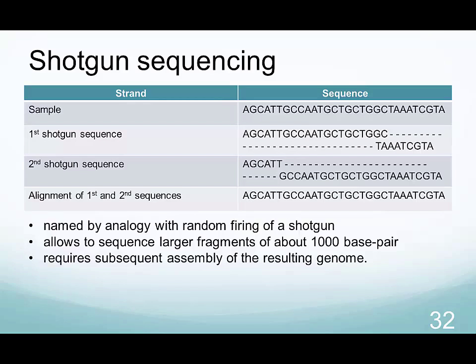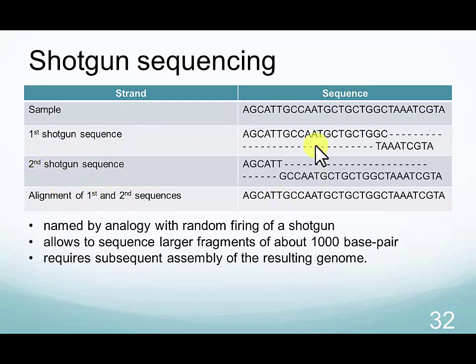In shotgun sequencing, the overlapping fragments are combined into the final assembly. In this simplified example, none of the individual shotgun sequences have the full length of the final sequence; however, by combining them into the final assembly, scientists were able to sequence almost the entire genome in a similar mode. Shotgun sequencing is named by analogy with the random firing of a shotgun, and the method usually requires assembly of the resulting genomes.